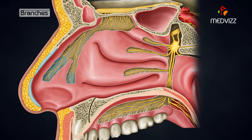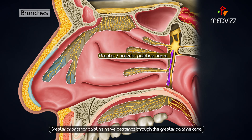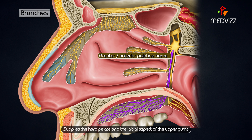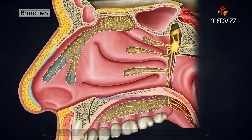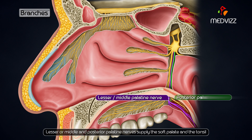Palatine branches: The greater or anterior palatine nerve descends through the greater palatine canal and supplies the hard palate and the labial aspect of the upper gums. The lesser or middle and posterior palatine nerves supply the soft palate and the tonsil.